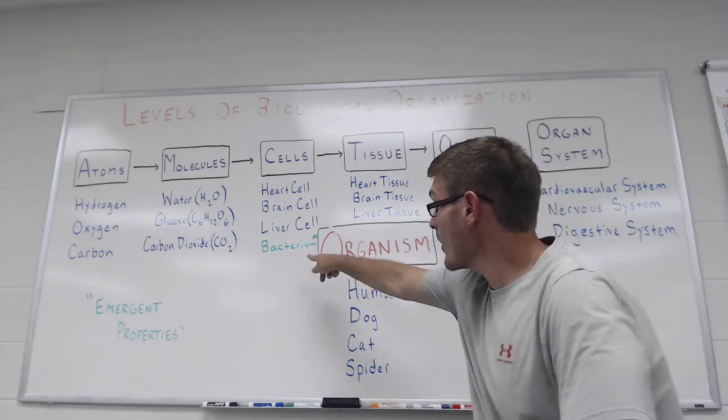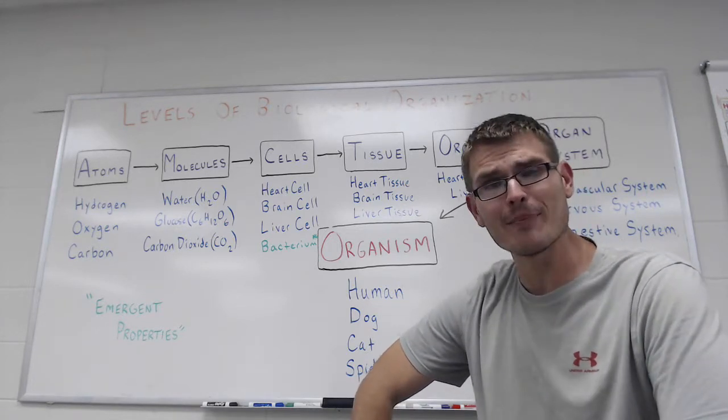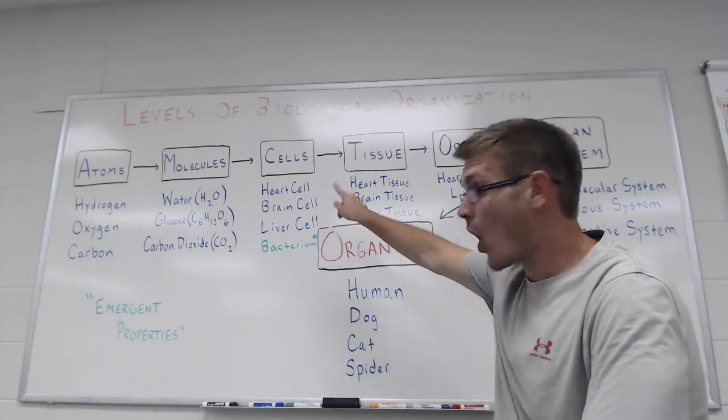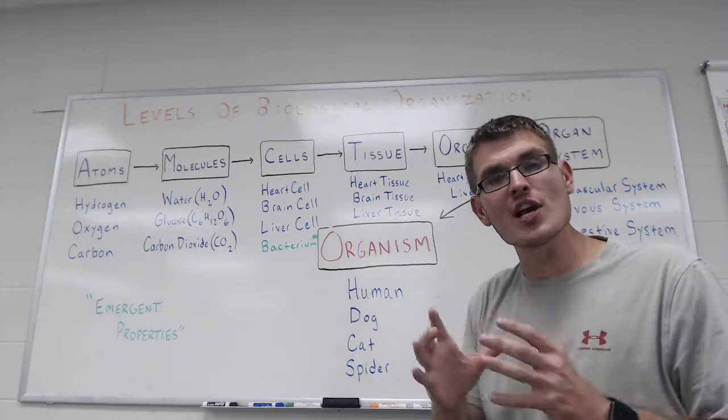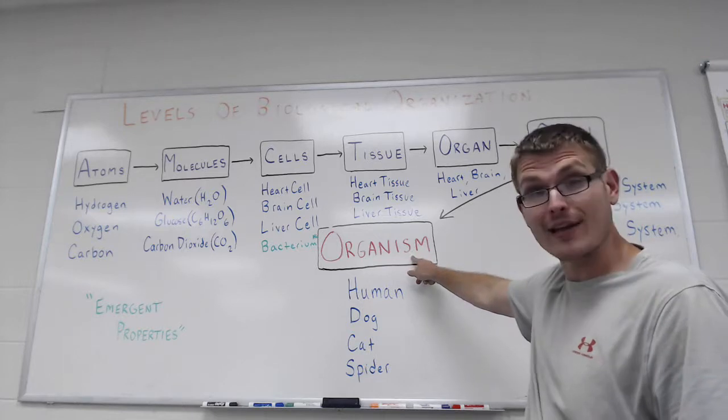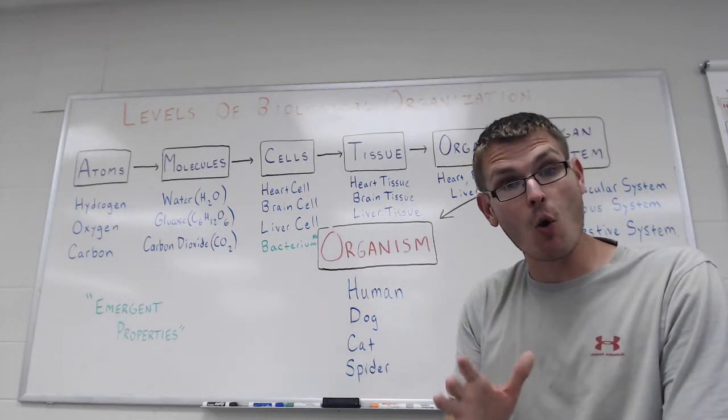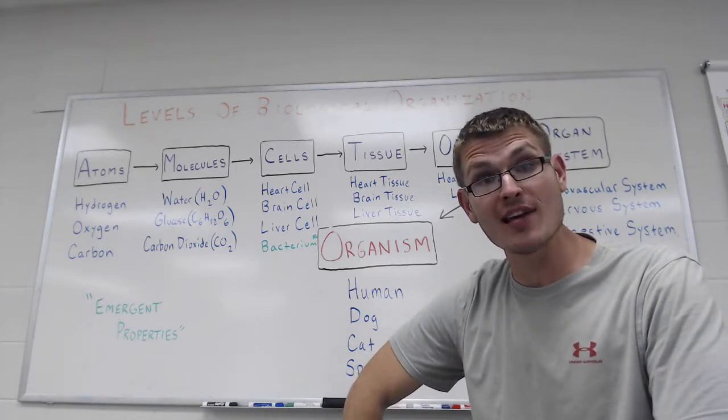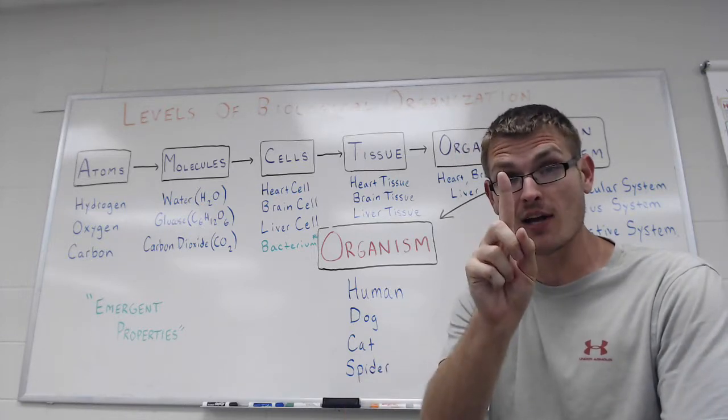So what you'll see listed here last as a fourth example of a type of cell is a bacterium. This is an important point to make because heart cells, brain cells, liver cells, these are just very small individual components of what will eventually make a whole organism. Bacteria on their own are organisms themselves. So a bacterium is what we call a unicellular organism. It's an organism that is only made up of one single solitary cell.